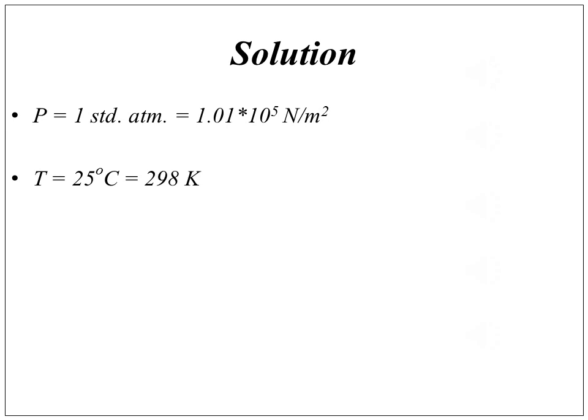Temperature T equals 25°C, which converts to 298 K. The distance between the two planes, Z, is given as 2 mm or 0.002 meters.